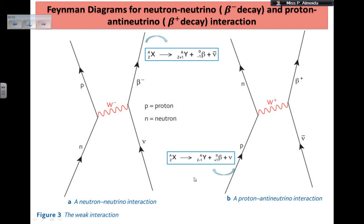In Feynman language, the first one — the beta decay — is a neutron-neutrino interaction, because I have a neutron that interacts with the neutrino and causes the neutron to go into a proton. When this happens, I get a beta particle being given out. The reason why this happens, or the exchange particle, is the weak boson — the W. In beta decay, I get a negative boson, so it has a negative charge. The formula for this interaction is shown here.